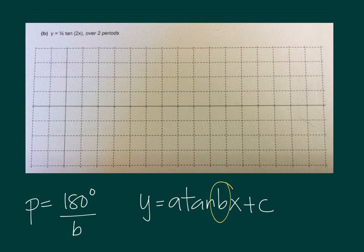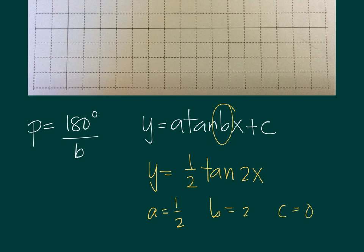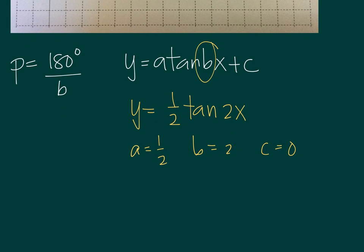So here, you could see that the b is basically the coefficient of x. So if the given function is y equals one-half tangent 2x, that means a is one-half, b is 2, and c is 0. So to find the period, all we have to do is to use the formula. So the period is 180 over b, and this is 180 divided by 2 equals 90 degrees.